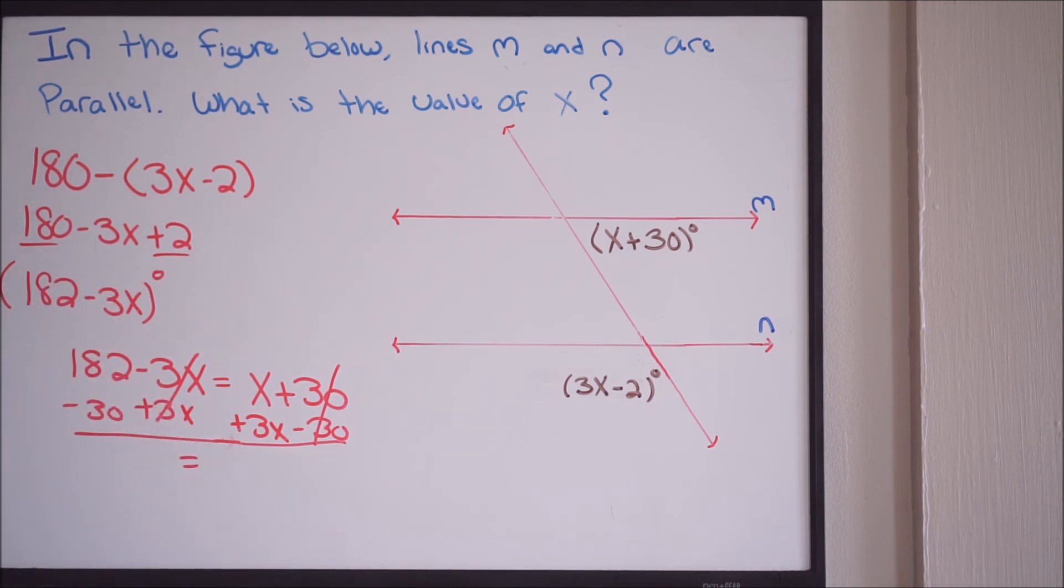So we have 182 minus 30. We know that that's going to give us 152. So we get 152 equal to an x plus a 3x, which will give us 4x. And our last step, we simply just want to divide by 4 here.